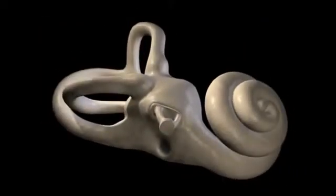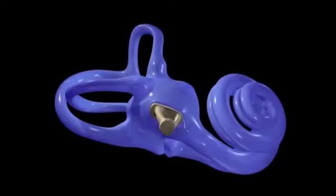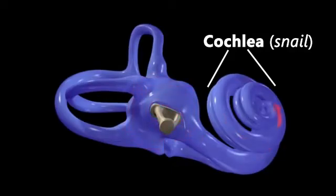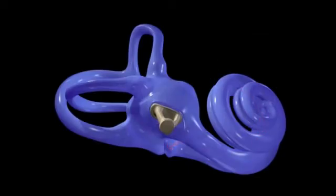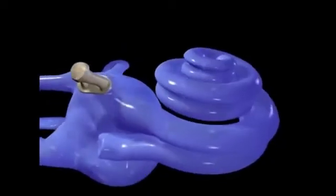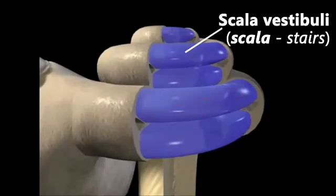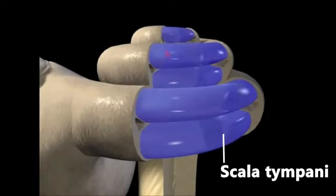The corridor leading to the round window is found within the spiral portion of the bony labyrinth, known as the cochlea. Vibrations produced by the stapes are drawn into the spiral system and returned to meet the round window. The portion of the spiral passage in which vibrations ascend to the apex of the cochlea is called the scala vestibuli. The descending portion of the passage is called the scala tympani.